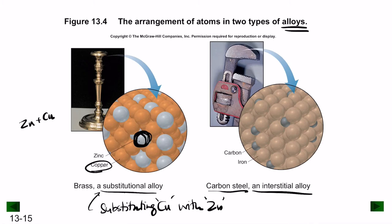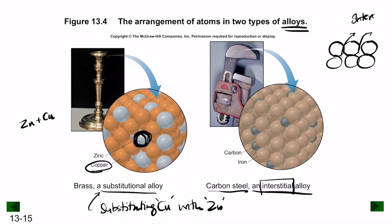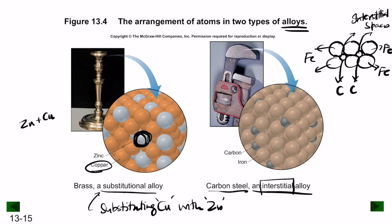In carbon steel, carbon atoms occupy the interstitial spaces between the iron molecules, making it an interstitial alloy. These are examples of solid-state solutions.